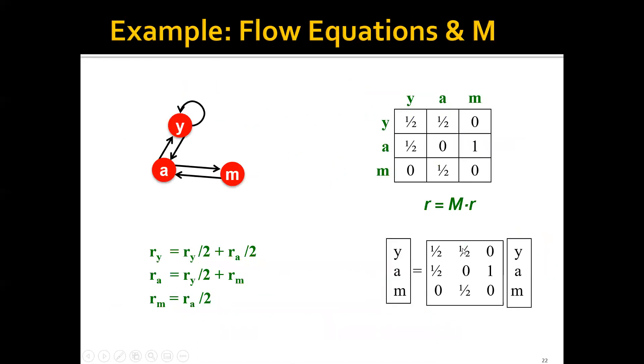For example, let's say we have this small graph here, and these are the flow equations. We already have the corresponding column stochastic adjacency matrix M. We have this equation, and we want to solve for r. In the next part, we'll talk about how to solve for r using the power iteration method.